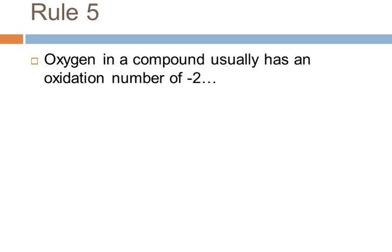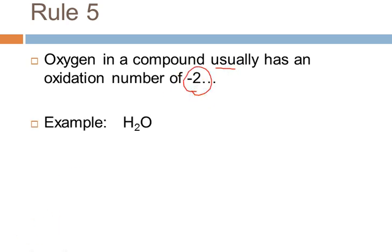Rule number five deals with oxygen. Oxygen in a compound usually, but not always, has an oxidation number of minus two. For example, in water, hydrogen normally has an oxidation number of plus one, and the oxygen has an oxidation number of minus two — piece of cake. Usually oxygen will be minus two for most of the compounds you encounter.